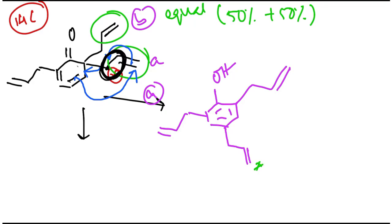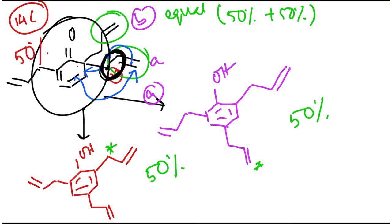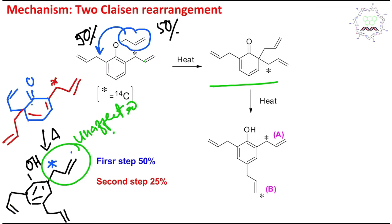The other product formed is phenol. Chemically both products are the same; only the label position differs. The label remains at its original position in that case, so 50% here and 50% there, as I mentioned. Now consider the initial percentage of this isomer in the reaction mixture: it was 50%. So that 50% will be divided by 2 — giving 25% here and 25% there.